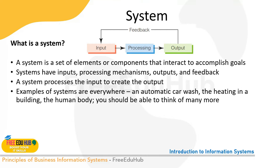Whenever we talk about information systems, the first thing that comes to mind is a system. The book defines a system as a set of elements or components that interact to accomplish a goal. Whenever we think of a system, there is always an input, a processing stage, and then an output.